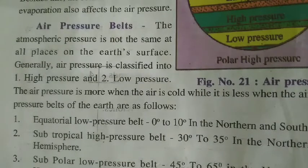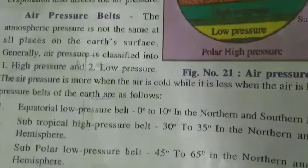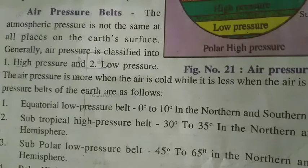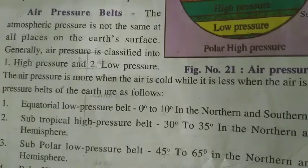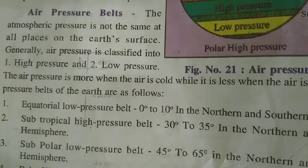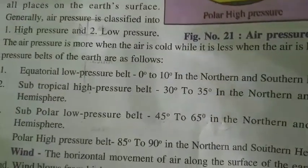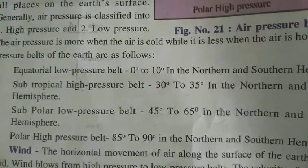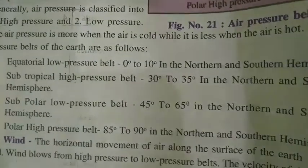Subtropical High Pressure Belt: 30° to 35°, also referred to in the northern and southern hemispheres. Subpolar Low Pressure Belt: 45° to 65°, also called Updhruviya Nimndabaiyuda Petya Belt in Hindi. Polar High Pressure Belt: 85° to 90° in the northern and southern hemispheres.